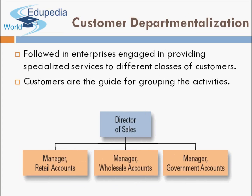Fourth is customer departmentalization. Sometimes a company produces one product but deals with multiple types of customers — wholesalers, retailers, government accounts, and corporates. The entire organization is divided into departments based on these different customers. For example, a service company providing services to the government, corporates, and individuals can divide into a Government Division, Corporate Division, and Individual Division. In such a structure, the Director of Sales might have managers for Retail Accounts, Wholesale Accounts, and Government Accounts.